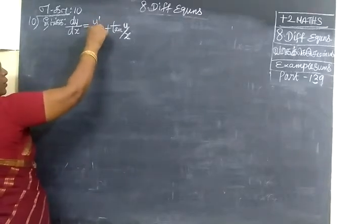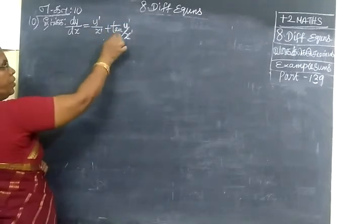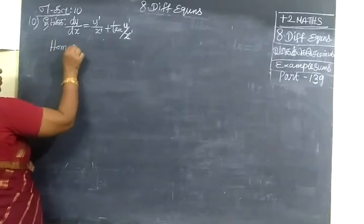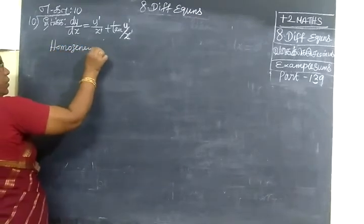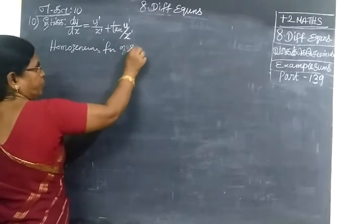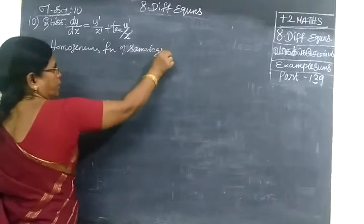If we look at the degree, we are the same. The same as, we can write it as a homogeneous function. This is the homogeneous function of the same degree. Degree 1 is same. So if degree is same,